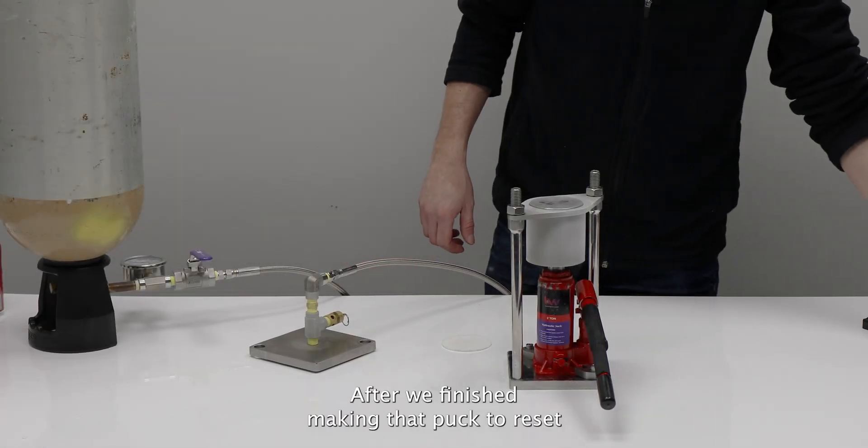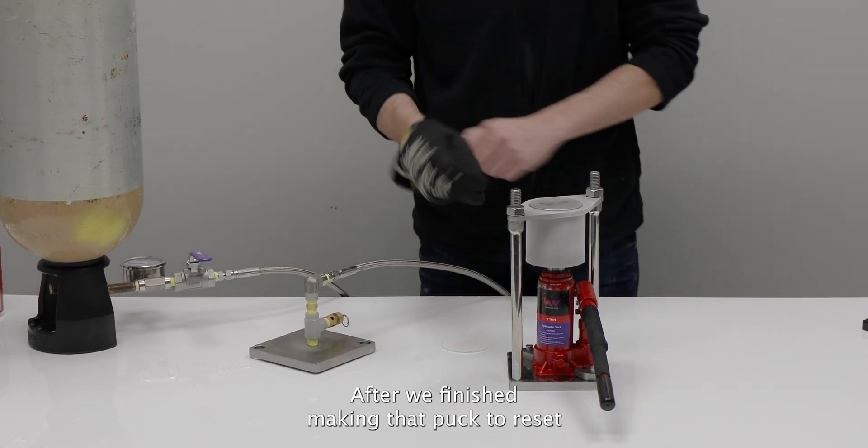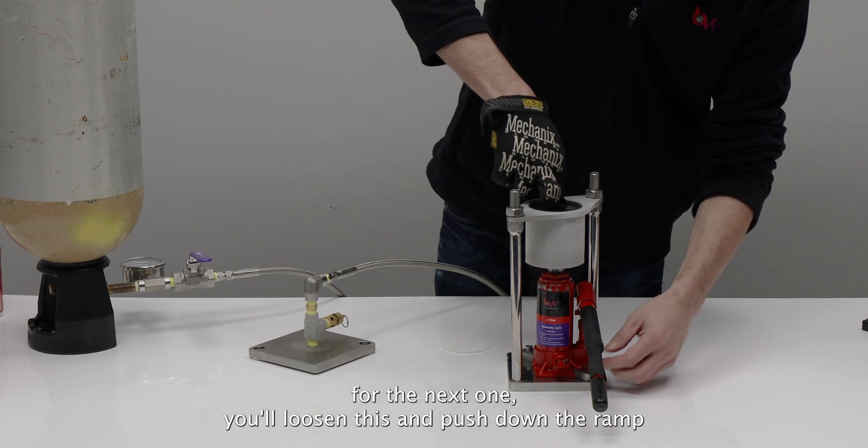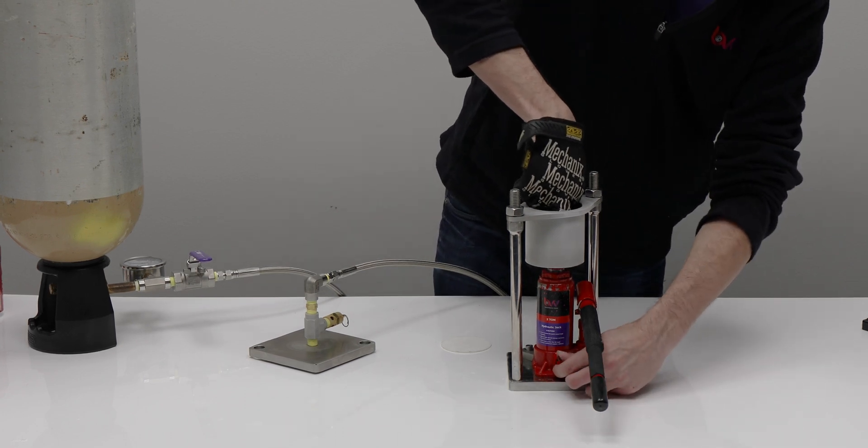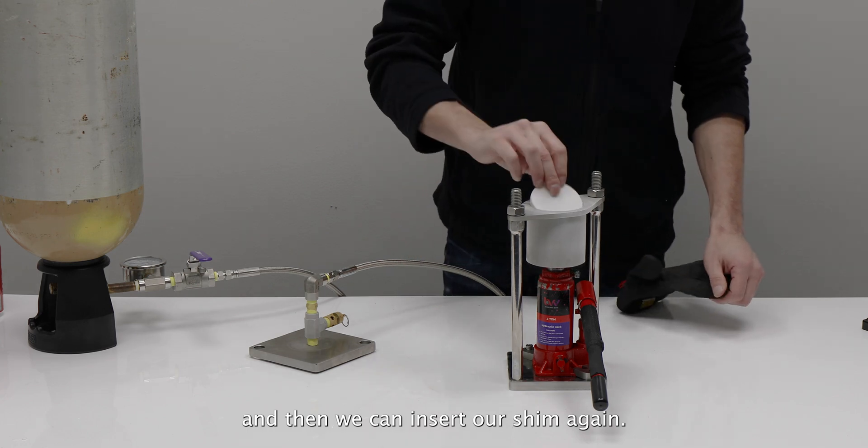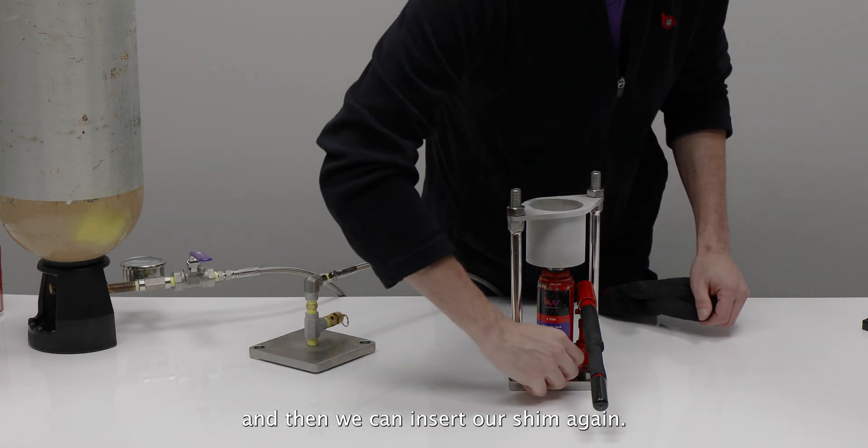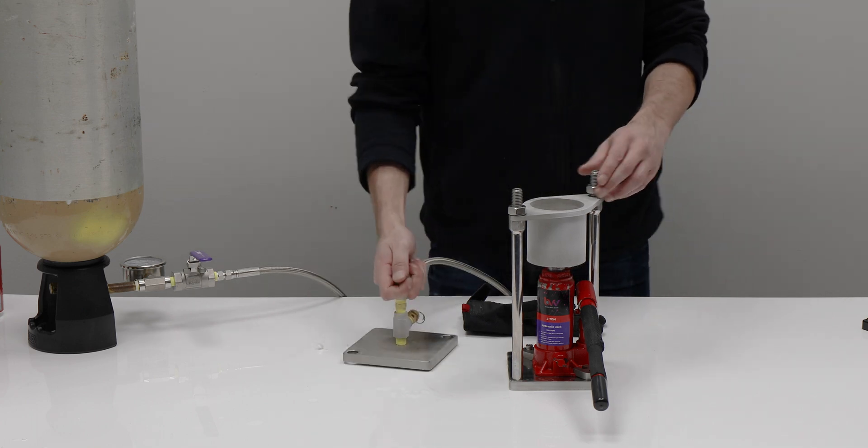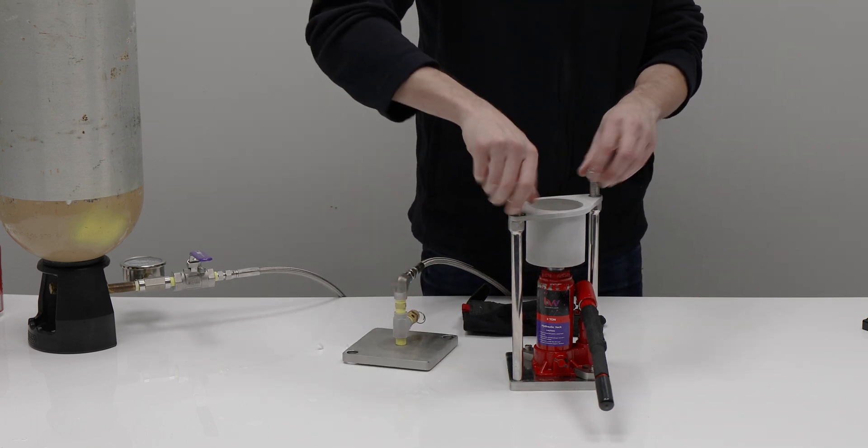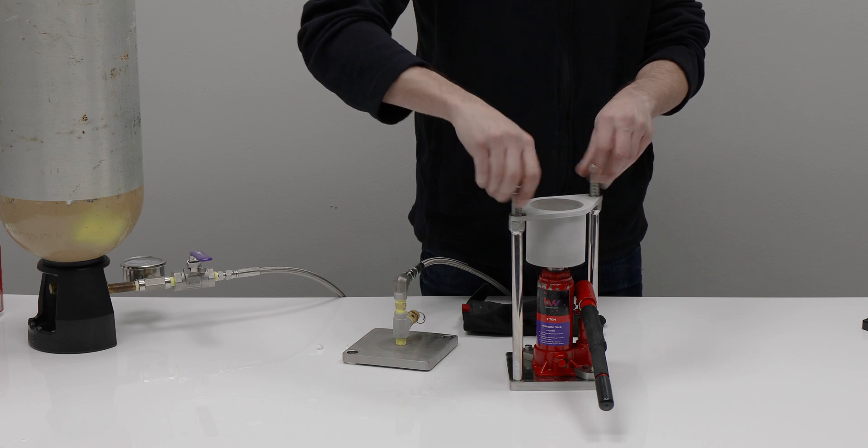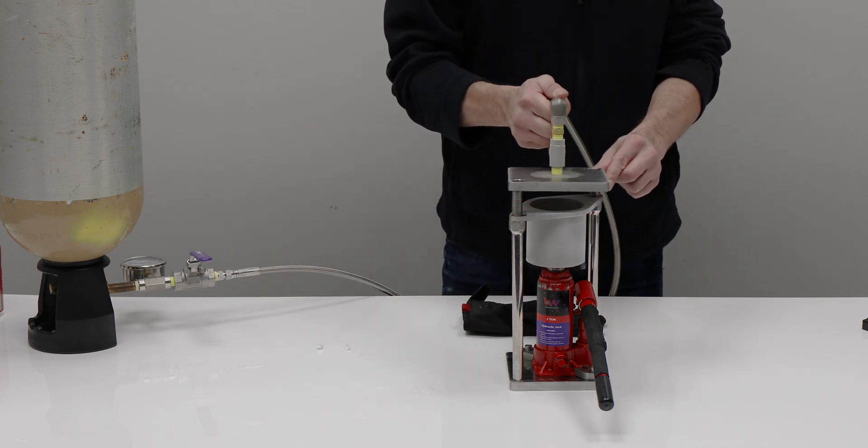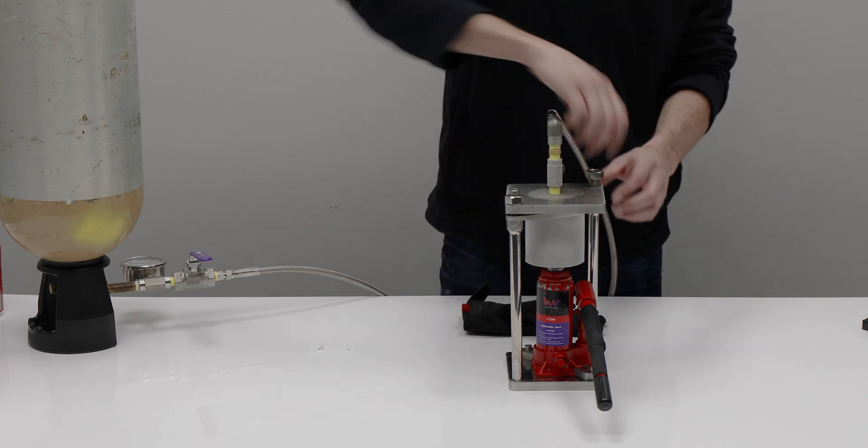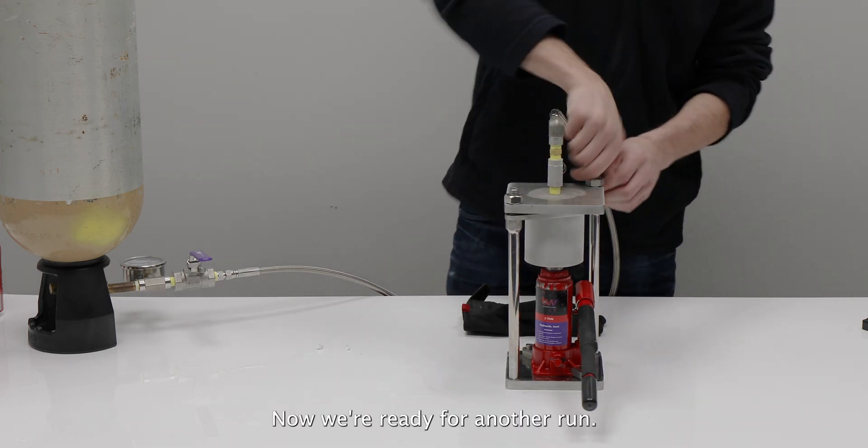After we're finished making that puck, to reset for the next one, you'll loosen this and push down the ram. And then we can insert our shim again. We're going to tighten the valve on the ram. And now we're ready for another run.